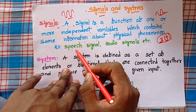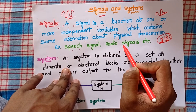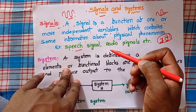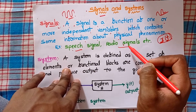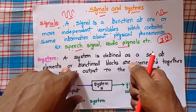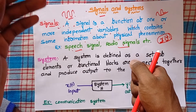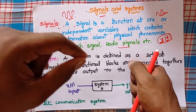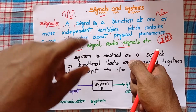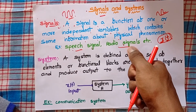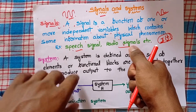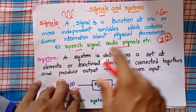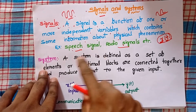Some examples of signals are speech signals and radio signals. A speech signal is our voice signal. Radio signals are what we receive from radios or what we transmit from our mobile phones to another mobile phone. These are called radio signals. This is about signals.